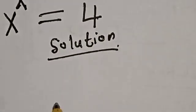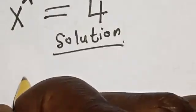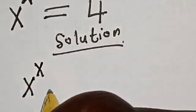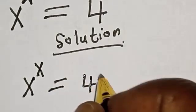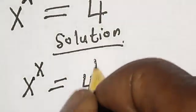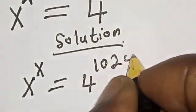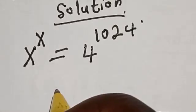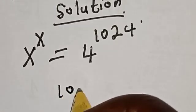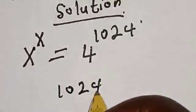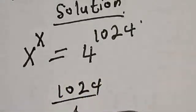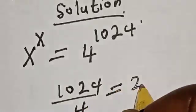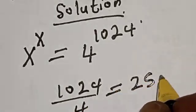We have the given question: s raised to the power s is equal to 4 raised to the power 1024. Now let's see — 1024 divided by 4 is equal to 256.